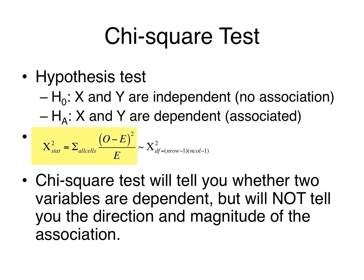Here's the basic formula. We calculate a chi-square statistic by subtracting what we expect to observe in our sample from what we actually observe for each of our cells, squaring this and dividing it by what we expect to observe, and then summing these values for each of the cells together. The chi-square statistic follows a chi-square distribution with degrees of freedom equal to the number of rows minus one times the number of columns minus one. The larger the chi-square statistic gets, the more evidence we have that the two variables may not be independent. Importantly, the chi-square test is similar to ANOVA in that it will tell you whether two variables are dependent but will not tell you the direction or magnitude of the association.